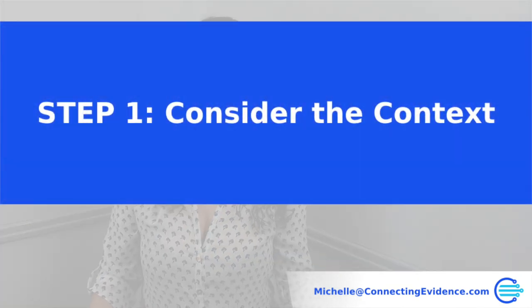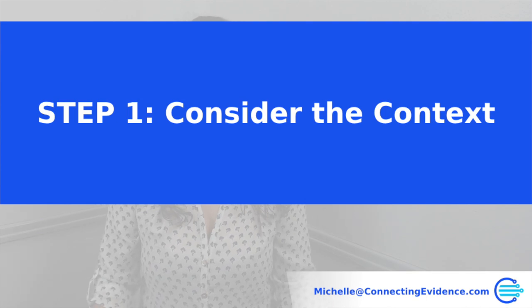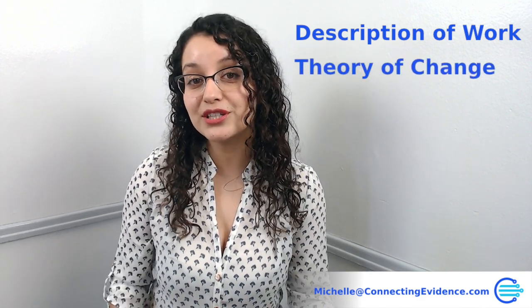So I promised you a five-step process — here it is. Step one: consider your context. I mean two things by this. You want to describe the work you do and the setting it lives in. And you also want to clarify how the things you do lead to the changes you want to see. This is often what's referred to as a theory of change. I have written about both of these things before, and I will leave resources in the description below for you to check out.